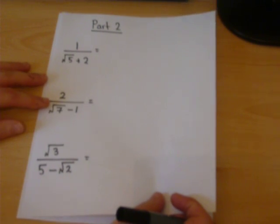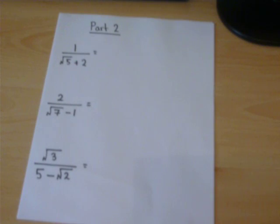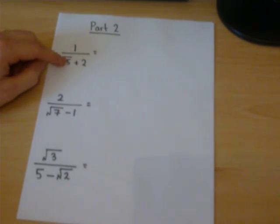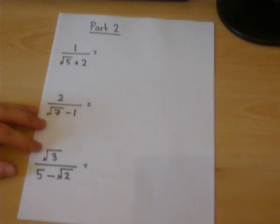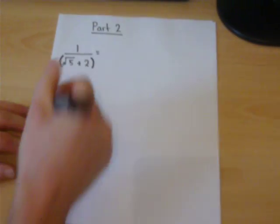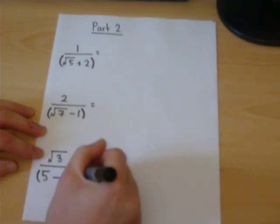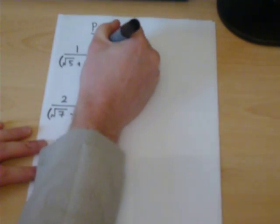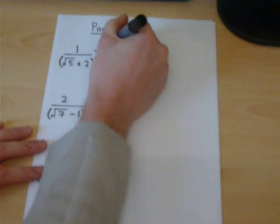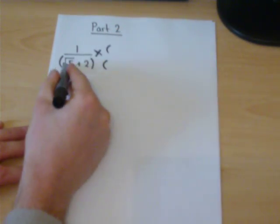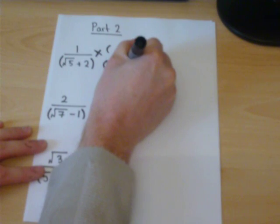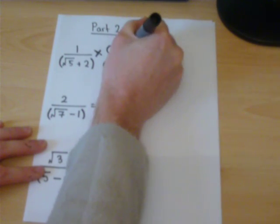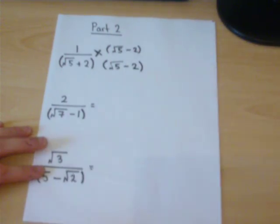So that's rationalising. These ones probably look a bit more confusing, but just bear with me because there's a standard trick when you've got two parts below with a plus or a minus. I tend to put brackets around the bottom of any expression. The trick for this one is to multiply the top and the bottom by the same expression but with the sign changed.